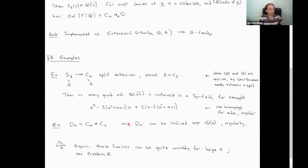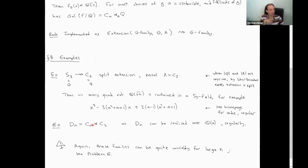On the other hand, in the book of Mali and Mazzat on Galois theory, they didn't even have a D11 family at all, because this was one of the groups that was just too difficult to construct computationally. And now you can do it, even though the results maybe are not very pleasant to look at.